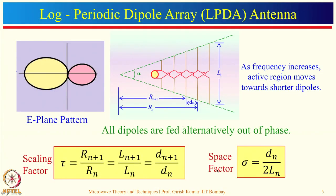Another quantity is the space factor sigma, defined as d_n divided by 2*L_n, where d_n is the spacing between adjacent elements. This defines the space factor for a given array.